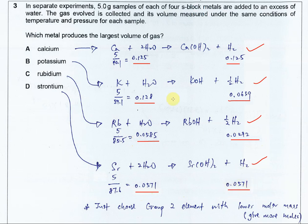So from here, we know that calcium is the one that produces a larger mole. And of course, hydrogen also larger because it's 1 to 1 ratio here.